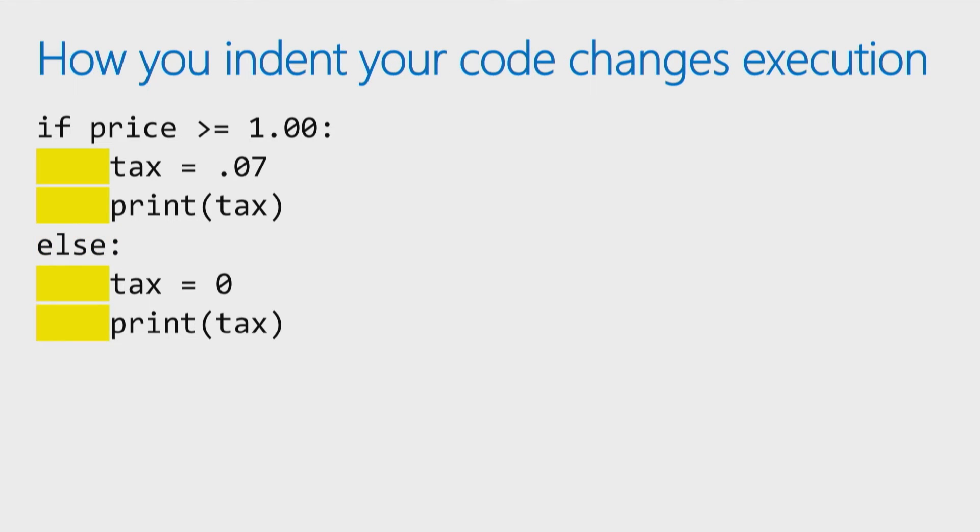The indentation really does change execution. I can actually write this exact same code a different way. Here I say if the price is over $1, set the tax to 7 and then print it. Otherwise, set the tax to 0 and print it. Or I could just say if the price is over $1, set the tax to 7, otherwise set it to 0, and when I'm all done evaluating the correct value of the tax, then print the tax out. Both of these will do exactly the same thing. I like the one on the right. It's a little bit more elegant, not having the print statement repeating. But if it's more confusing for you, there's nothing wrong with the code on the left.